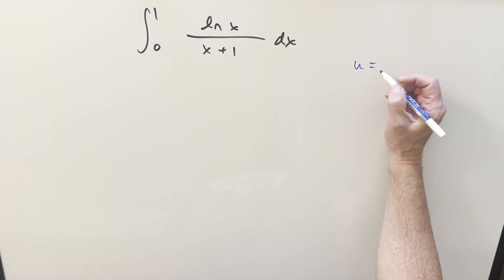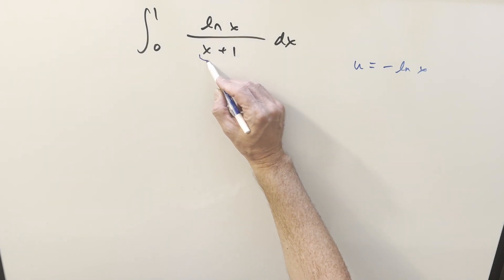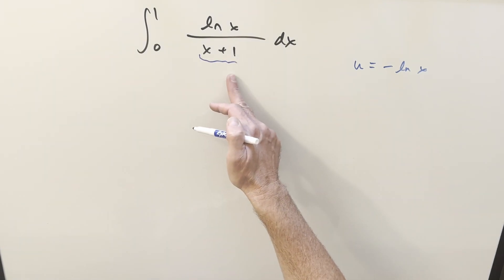I wanted to start with a u substitution, but I'm doing this because I eventually want to do a series expansion, noticing this one plus x here. We can use this to get this in the form of a geometric series.